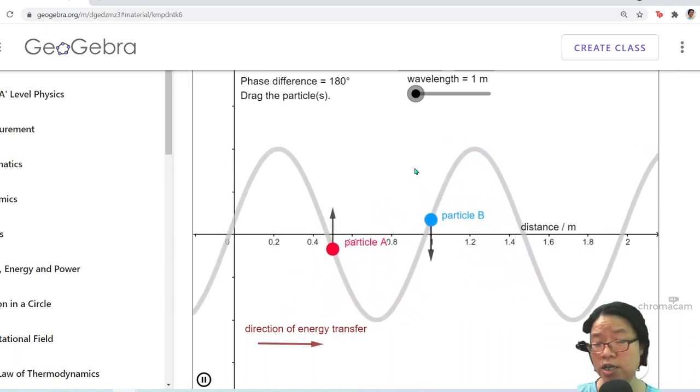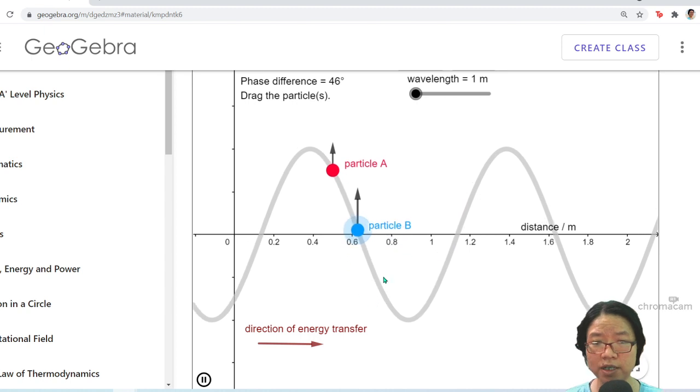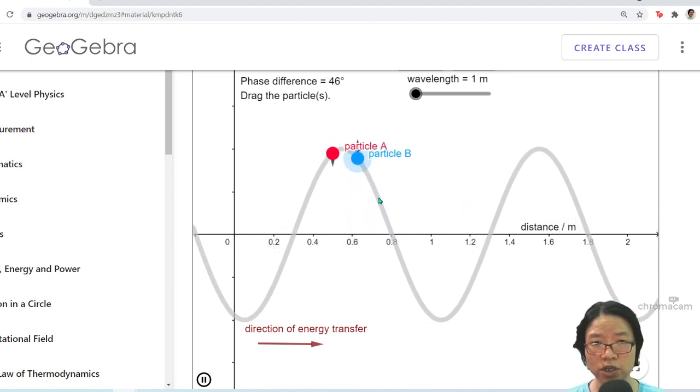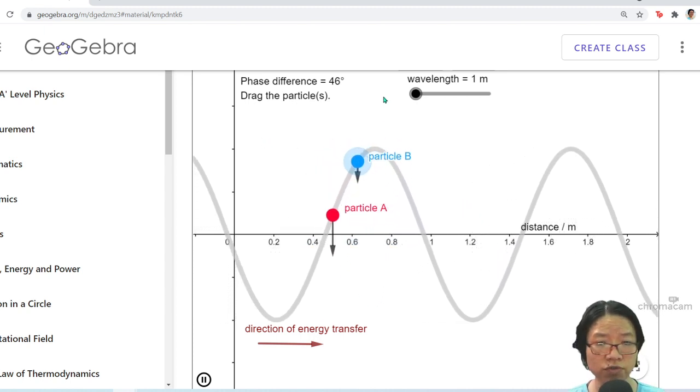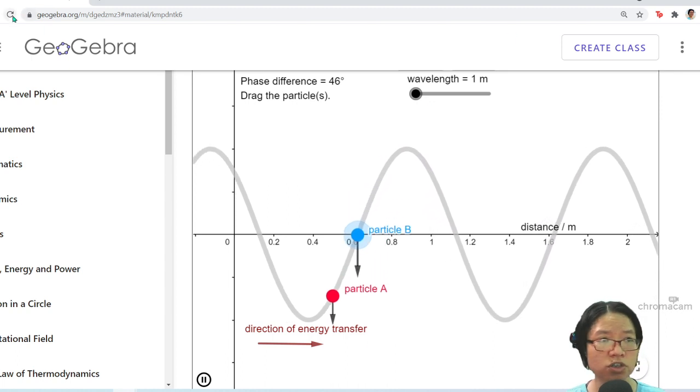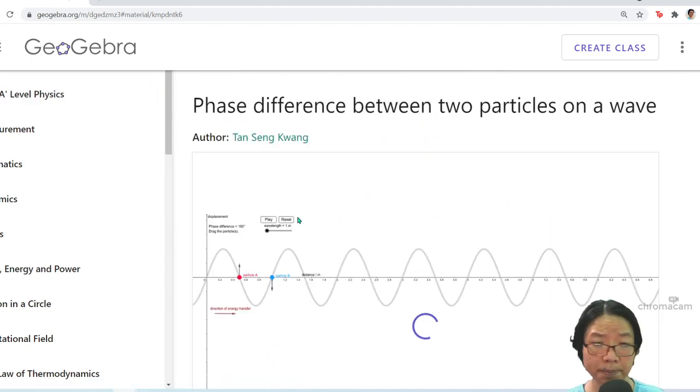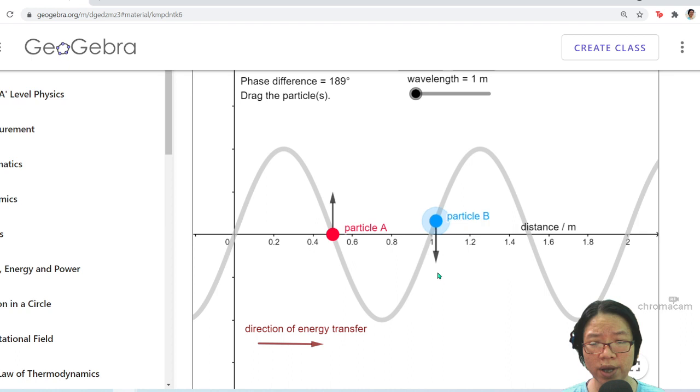We also know that if I were to move this particle closer to each other, the phase difference will shift. An interesting observation is that when I increase it to 360, this is what 360 degrees looks like. If you do 360, you understand we have already completed a cycle.